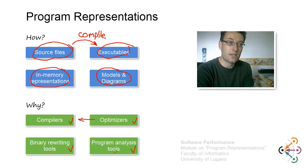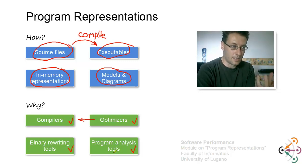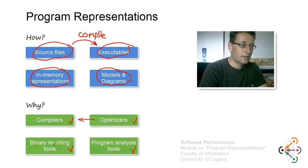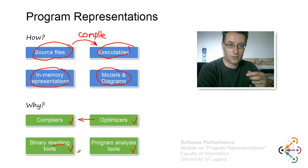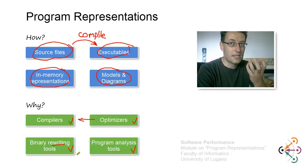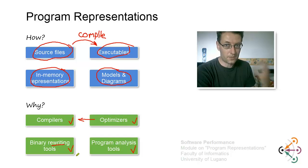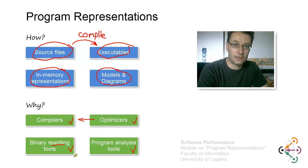The static tools look at the program as it is, as an artifact — they examine the program representation and determine good or bad, or find certain properties. The dynamic ones rewrite the programs: they take a program as input, like a compiler, and produce a program as output. The output program does the same thing but is also instrumented to perform dynamic analysis. When you run it, it does its normal task and as a side effect also produces, for example, a profile showing how fast it was, or a trace showing what it did and in which order.